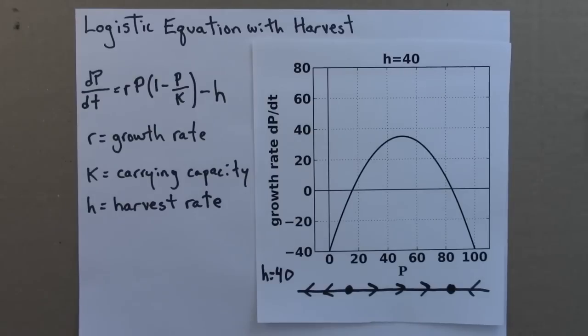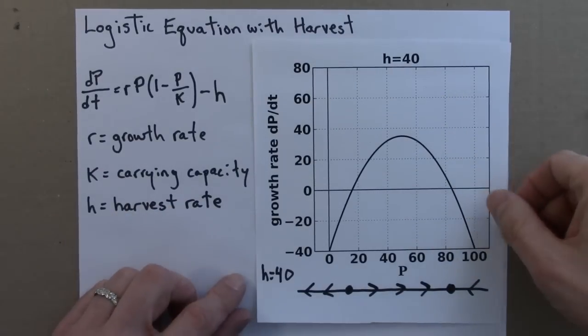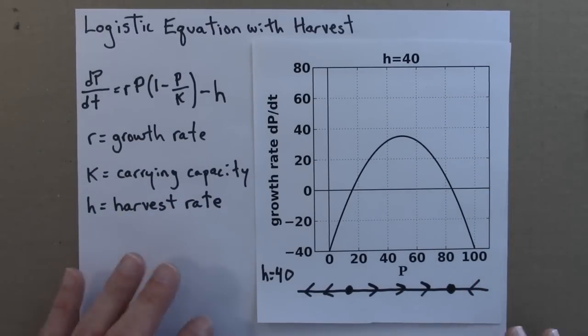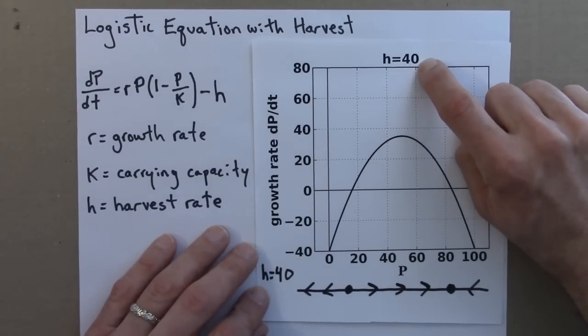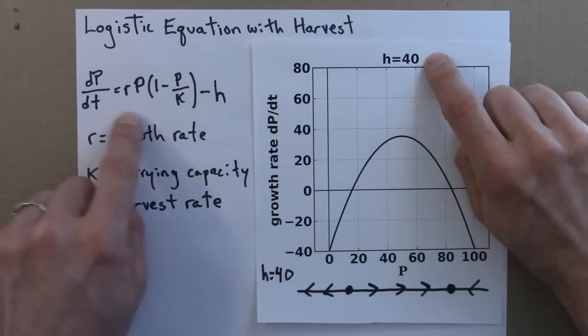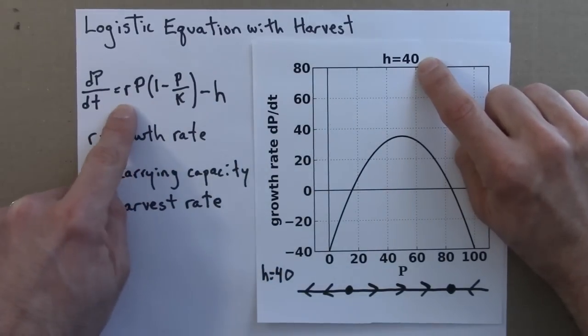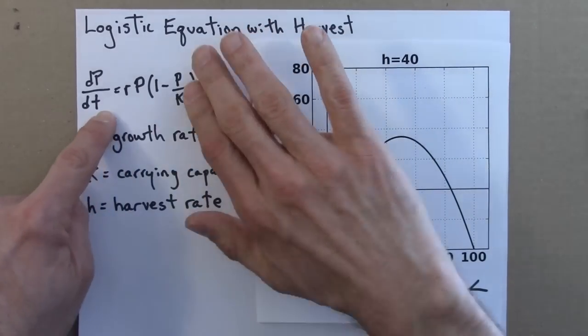And this is h equals 40. Note, by the way, that the steady population, you might think, okay, the steady population, the carrying capacity used to be 100, and now if I harvest 40 a year, presumably that would move it down to 60. And it doesn't quite work that way because this has a pretty large growth rate. So yes, you're harvesting, but they're also growing, sort of growing back part of the way towards the 100, which is what it would want to be, what the population would go to if h wasn't here.